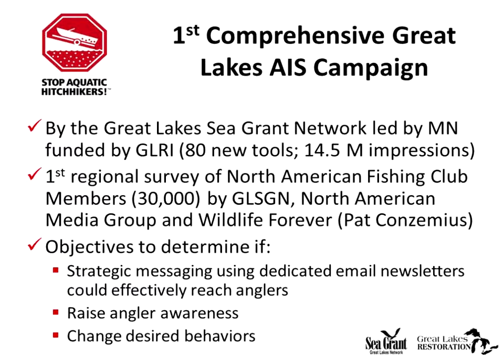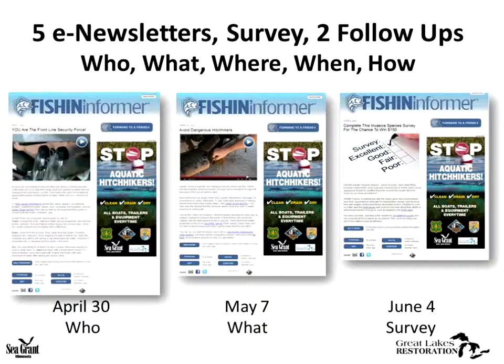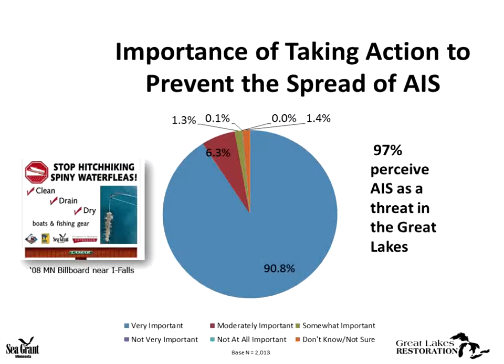In 2010, the Great Lakes Sea Grant Network launched the first comprehensive regional campaign on aquatic invasive species, funded by the Great Lakes Restoration Initiative. The network produced over 80 new tools and generated 14.5 million exposures — 300 times more than anticipated. As part of the campaign, the first regional survey of North American Fishing Club members was conducted in collaboration with the North American Media Group and Wildlife Forever. Objectives were to determine if strategic messaging in dedicated email newsletters could effectively reach anglers, raise awareness, and change behaviors.